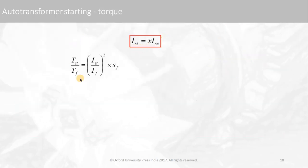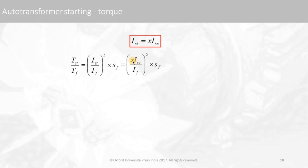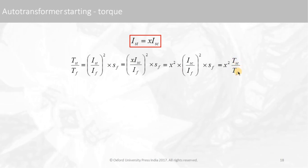For the torque: T_start / T_full-load equals (I_start / I_full-load)² × s_full-load. Substituting I_start = x · I_sc gives x² outside the bracket, and the remaining term (I_sc / I_full-load)² × s_full-load is nothing but T_sc / T_full-load — the short circuit torque ratio. After simplification, the full load torques cancel, giving the starting torque as x² · T_DOL_start.